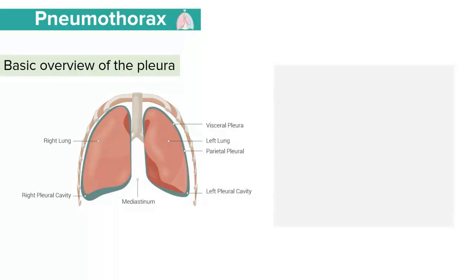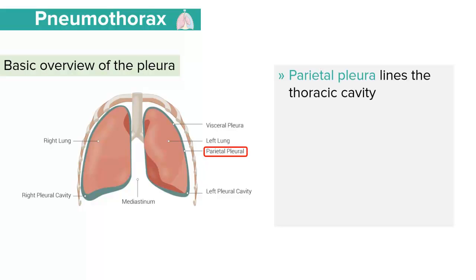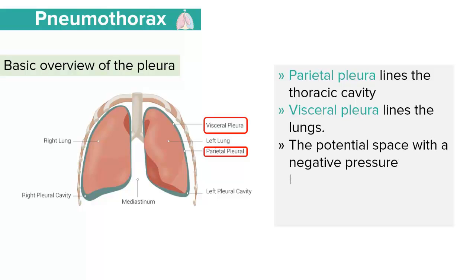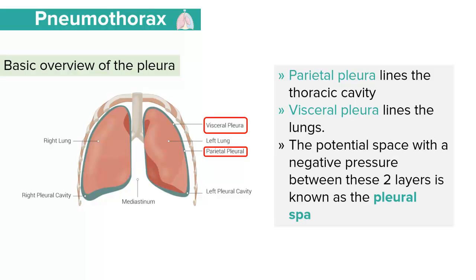In a normal human being, we have two types of pleural membranes: the parietal pleura, which lines the thoracic cavity, and the visceral pleura, which lines the lung surface. In between these two membranes, we have a potential space which has a negative pressure. This space is known as the pleural space or the pleural cavity. Any accumulation of air within this pleural cavity is what's known as pneumothorax.